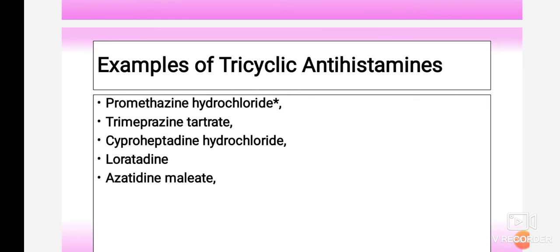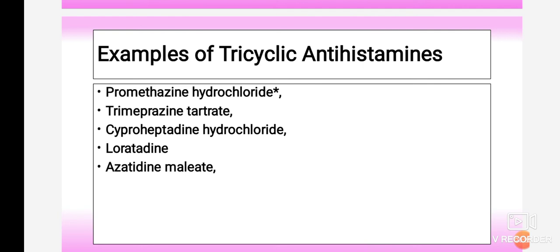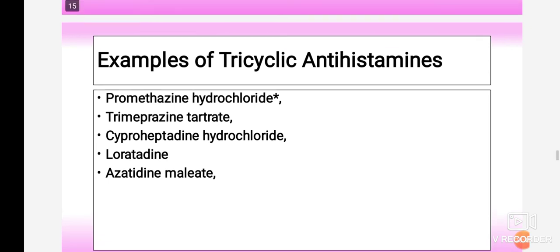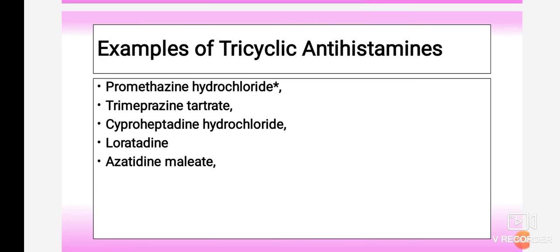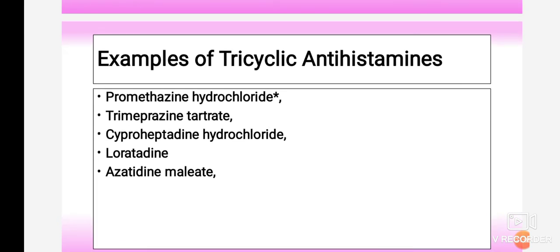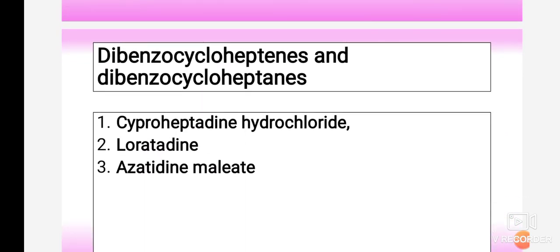The first chemical class is ethanolamine ether antihistamines, and the drugs under this class include dimenhydrinate, doxylamine, trimethobenzamide, dimethindene, and diphenylpyraline. The second chemical class is tricyclic antihistamines, and the drugs under this class include promethazine, trimeprazine, cyproheptadine, loratadine, and azatadine. Dibenzocycloheptines and dibenzocycloheptanes include loratadine, azatadine, and cyproheptadine.